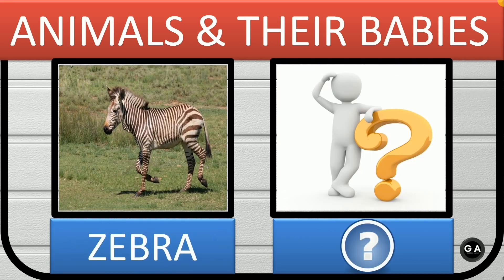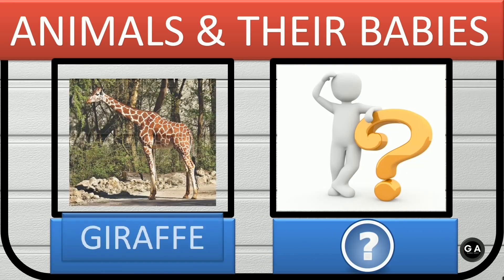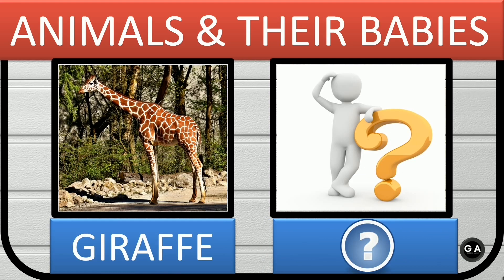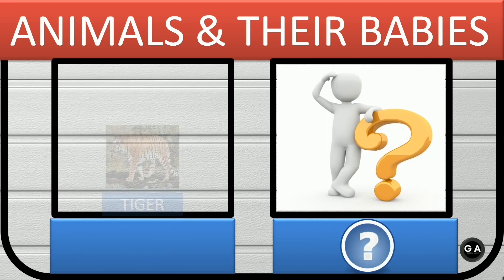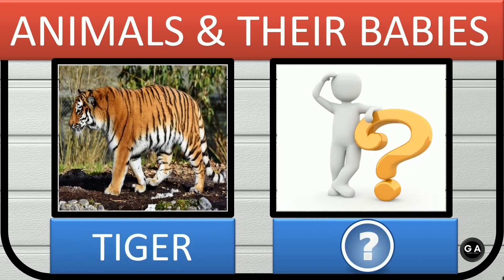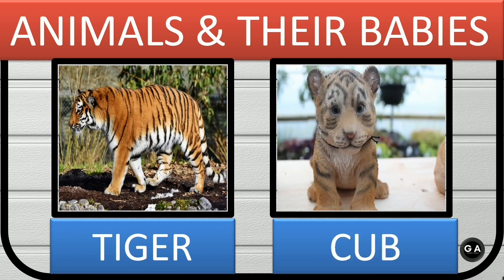Zebra. Zebra's baby is colt or foal. Giraffe. Giraffe's baby is calf. Tiger. Tiger's baby is cub.